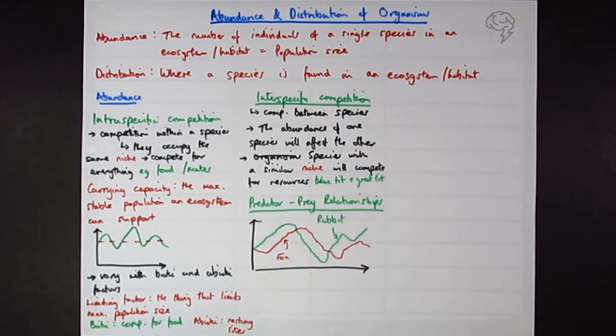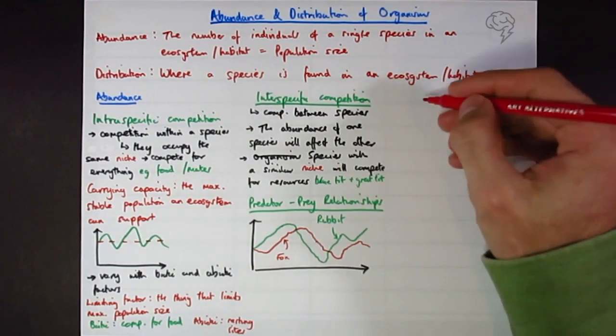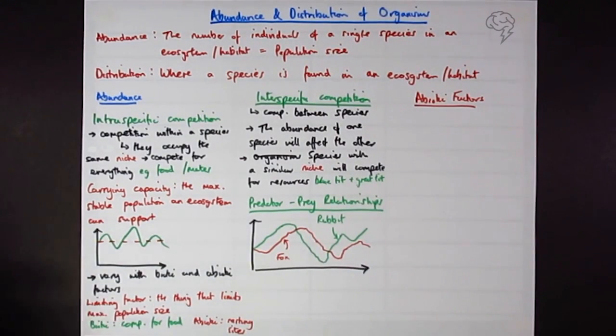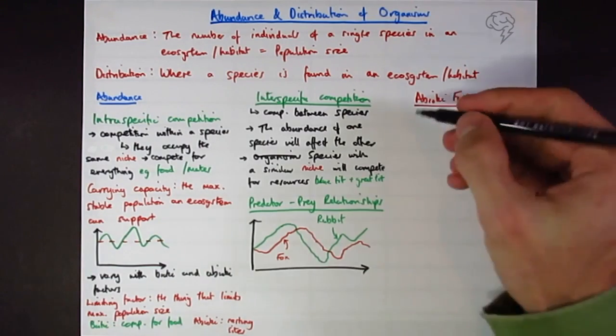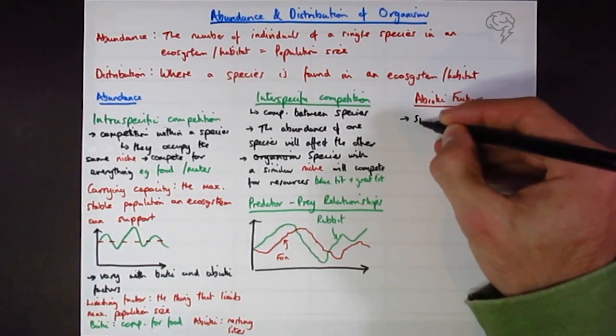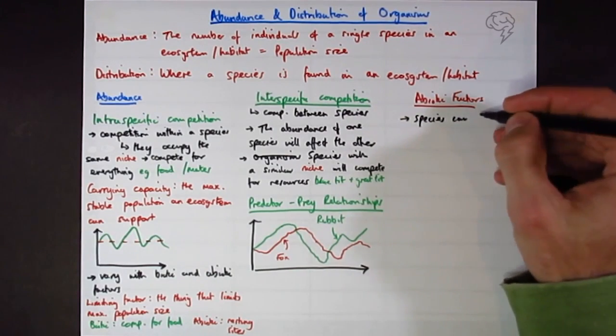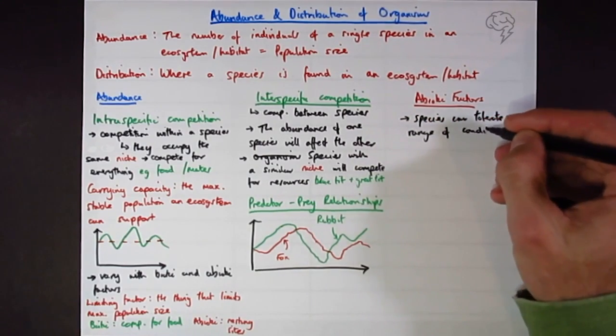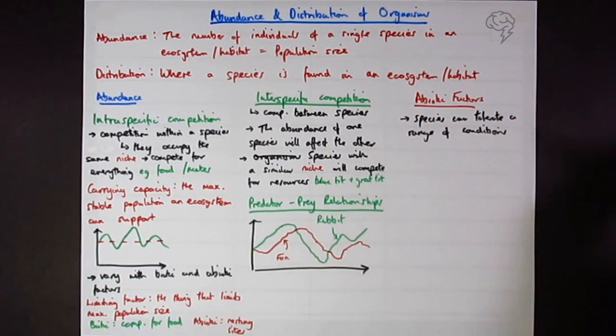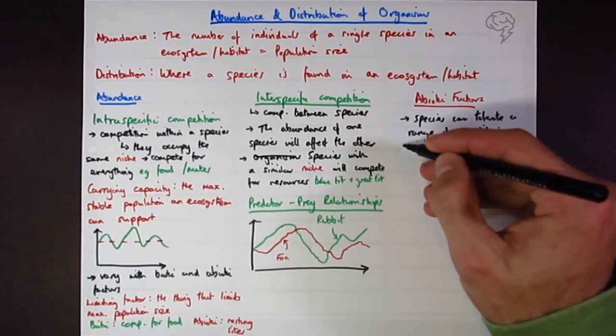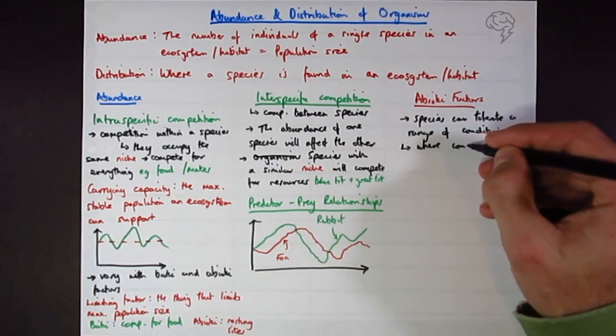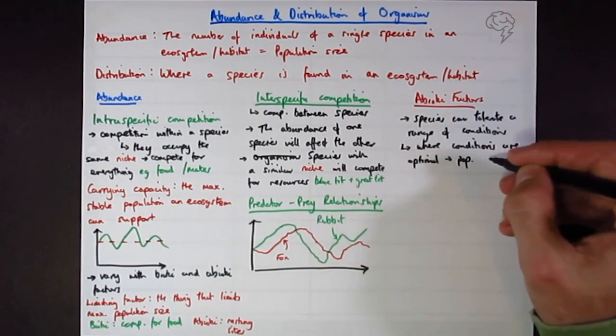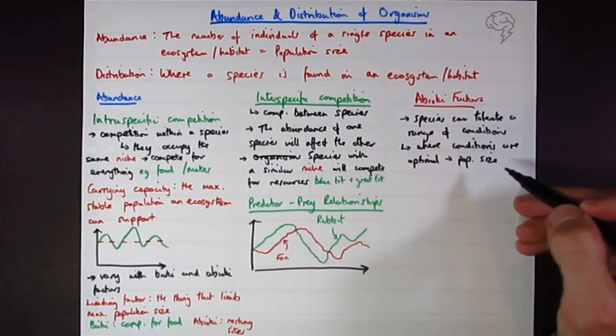I only need a tiny bit of space for distribution. So let's look at some abiotic factors. The abiotic factors that are going to affect abundance are that individuals can tolerate a certain range of abiotic conditions - a certain temperature, a certain pH. Where conditions are optimal, population size will be the greatest.